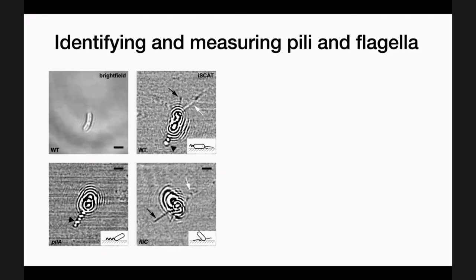We've applied this iSCAT microscopy to many different microbial systems. The main one we're studying is Pseudomonas aeruginosa, the opportunistic pathogen. We can do a lot of biophysical measurements that really inform us about the physiology of the bacterium — answering questions about the dynamics of pili rather than just their static structural aspects. We can generate mutants of different pili components: a mutant that has only a flagellum on iSCAT, and a mutant that only has pili. We can measure their length, their numbers. It's opening another dimension in the way we study these microbes.